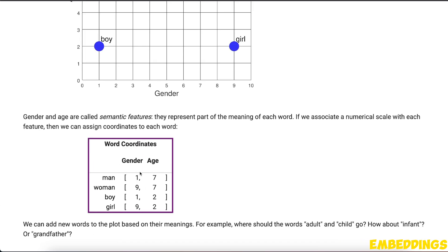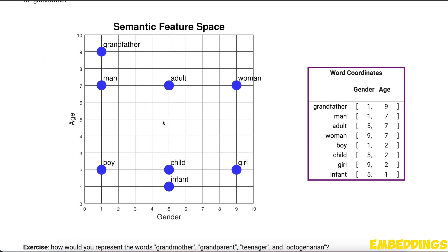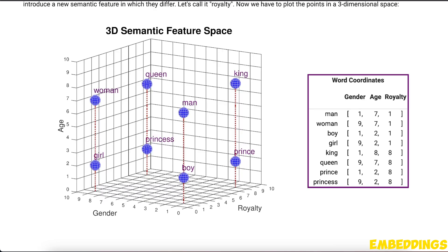You can add more words to this two-dimensional semantic space, and then you start seeing a pattern — words which are semantically closer to each other are going to be closer in this semantic feature space as well. For example, a grandfather is closer to man versus being closer to a woman. And the beauty is that you can add more features to this feature space. For example, now we are looking at royalty as well, so this becomes a three-dimensional space and you can represent each word as a vector of three dimensions.